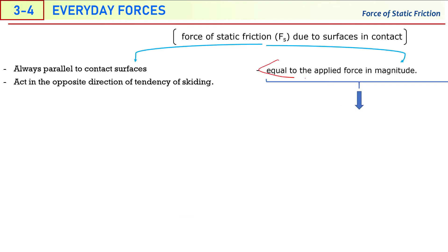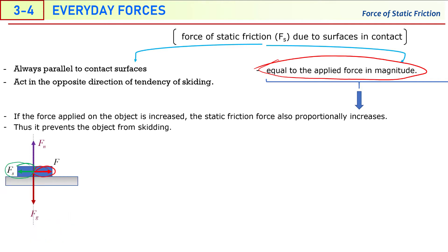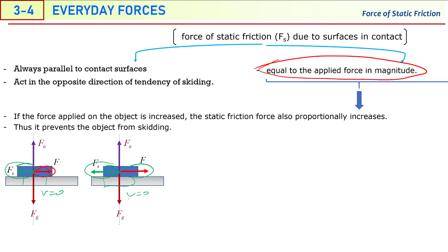If the object is at rest — if velocity is zero and the object is not moving — then according to Newton's first law, F and Fs must be equal in magnitude and opposite in direction, so their sum is zero. If you apply a small force, static friction becomes small, their magnitudes are equal, net force is zero, no motion. If you increase the force, static friction also increases, so again net force is zero and the object stays at rest. If no force is applied, static friction becomes zero.